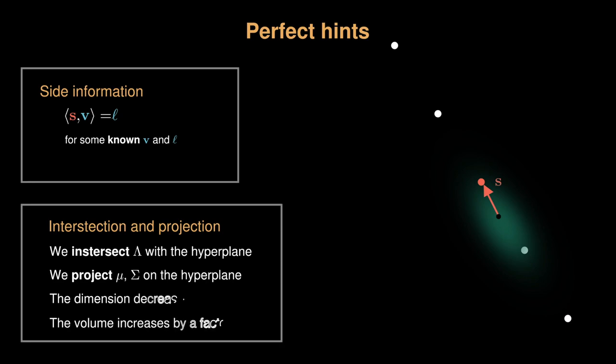By intersecting the lattice with the hyperplane, we get a new lattice. We also change the mu and covariance correspondingly based on the conditional information. And finally, we get a new DBDD instance. For the new instance, the lattice has a dimension decreased by 1, and has the volume increased by a factor of v. As a result, by integrating a perfect hint, we get an easier DBDD instance to solve.